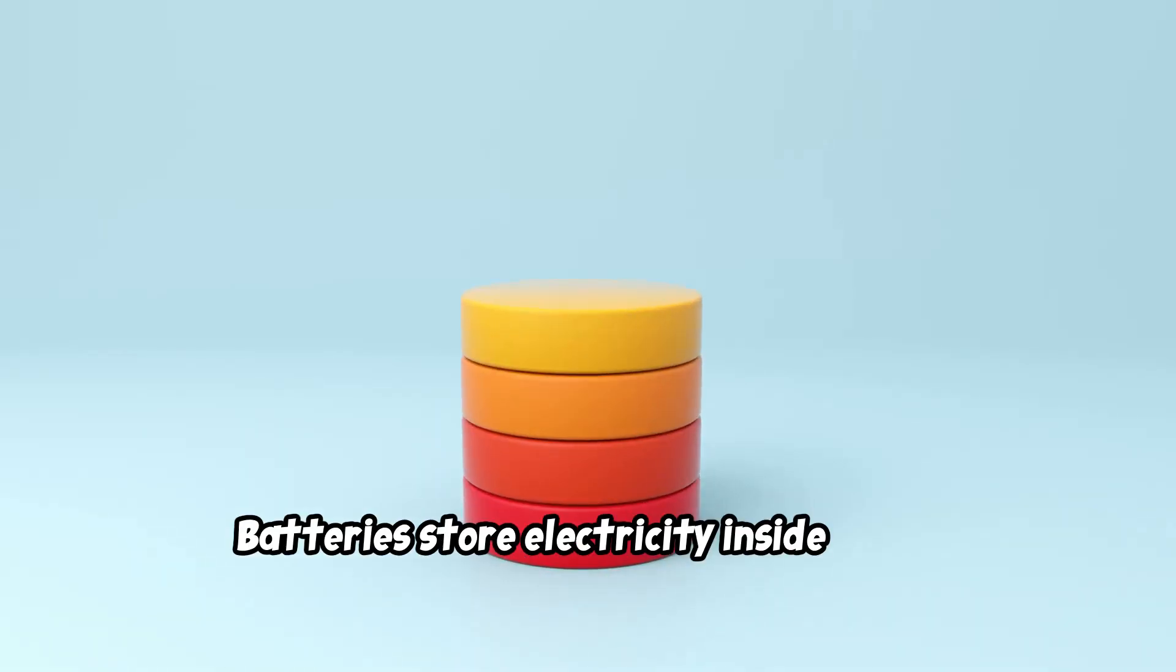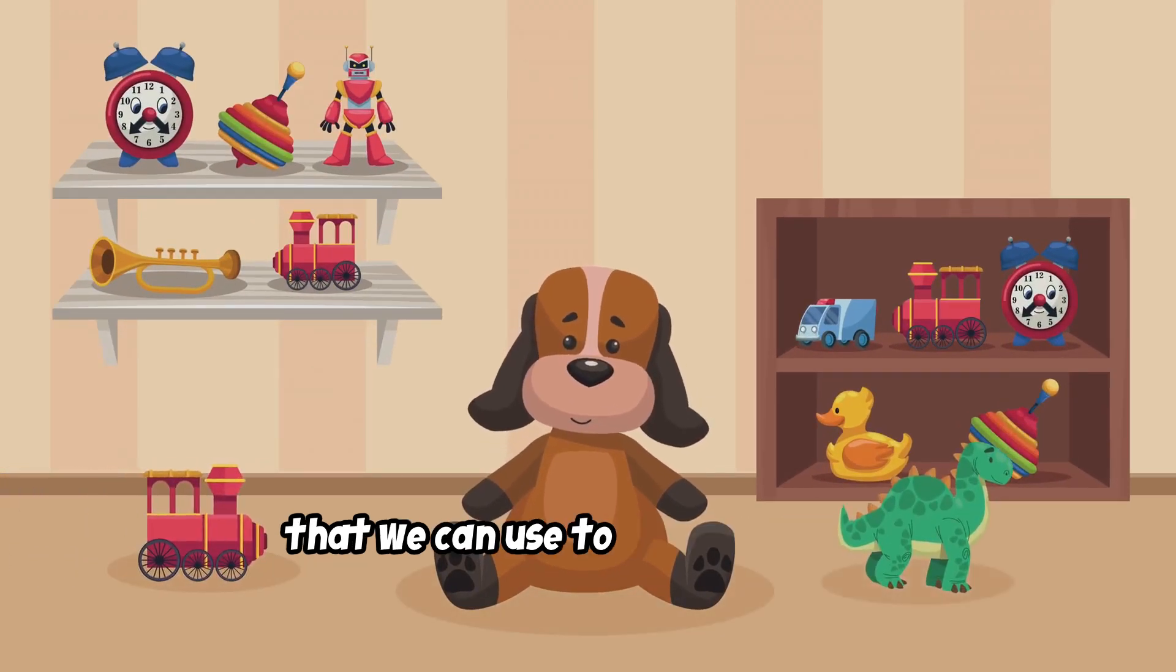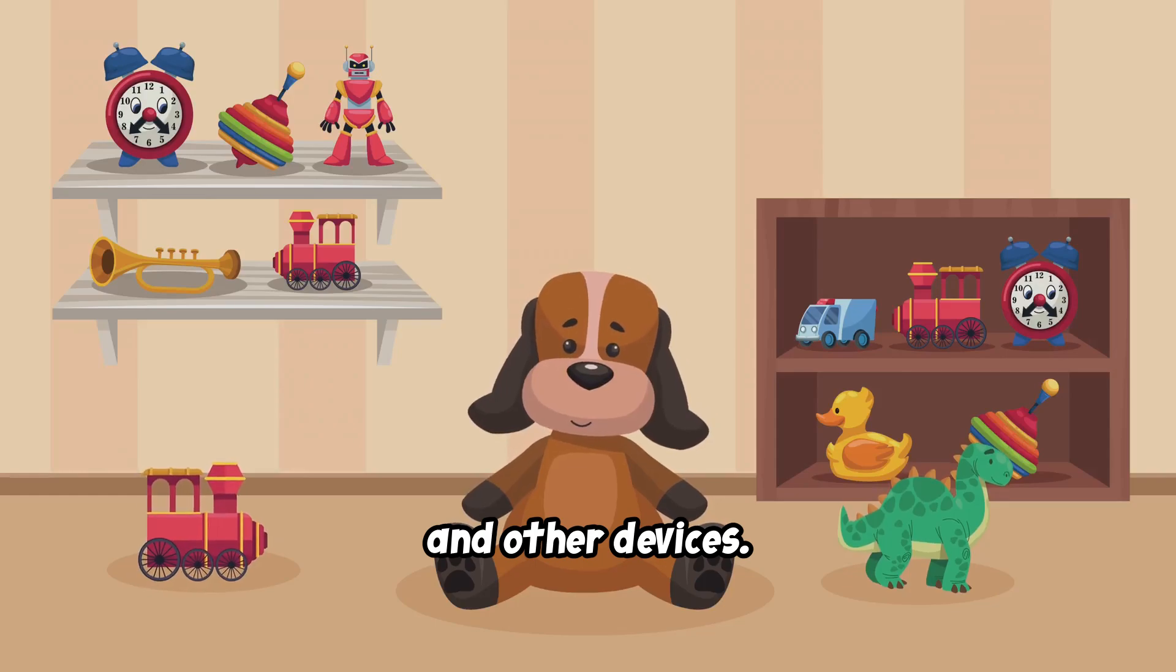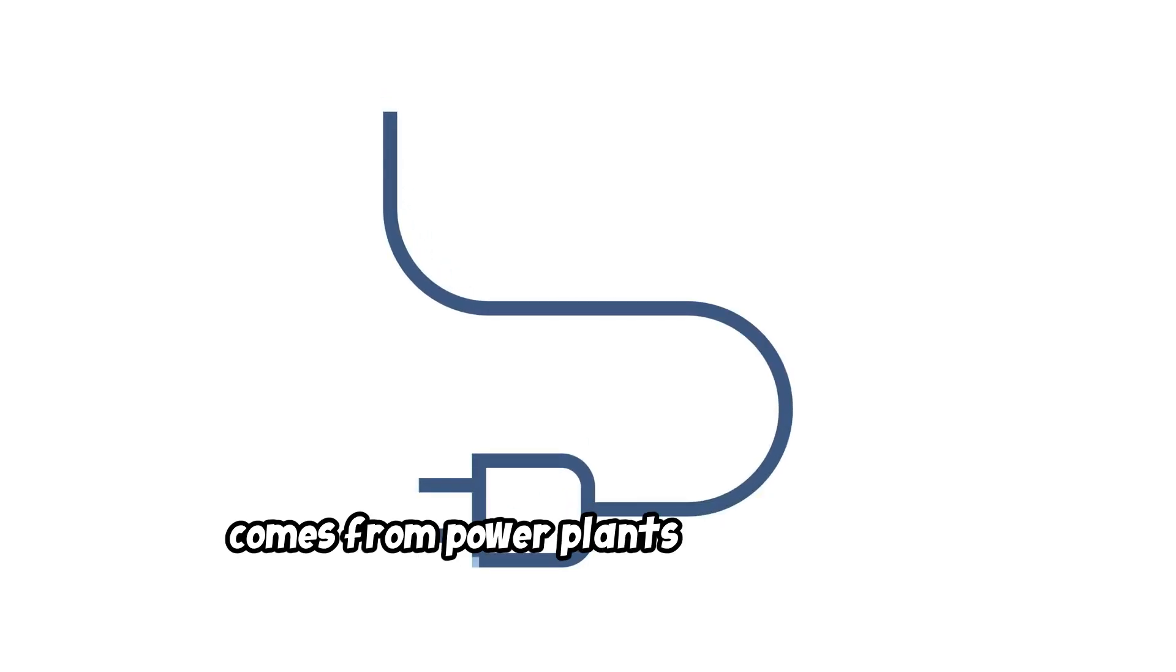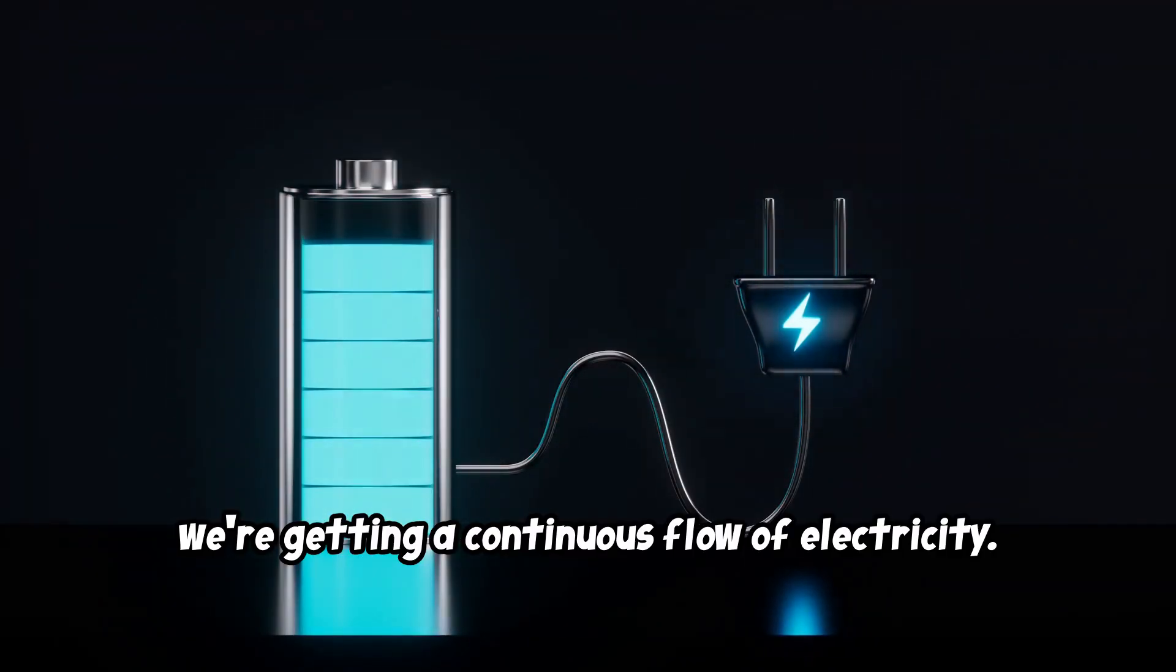Batteries store electricity inside them. They're like little containers of energy that we can use to power our toys, flashlights, and other devices. Plugged in power, on the other hand, comes from power plants through wires. When we plug something in, we're getting a continuous flow of electricity.